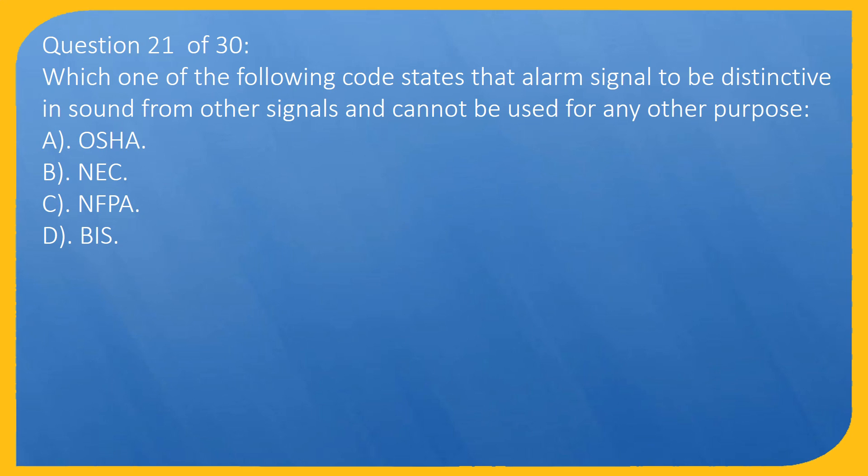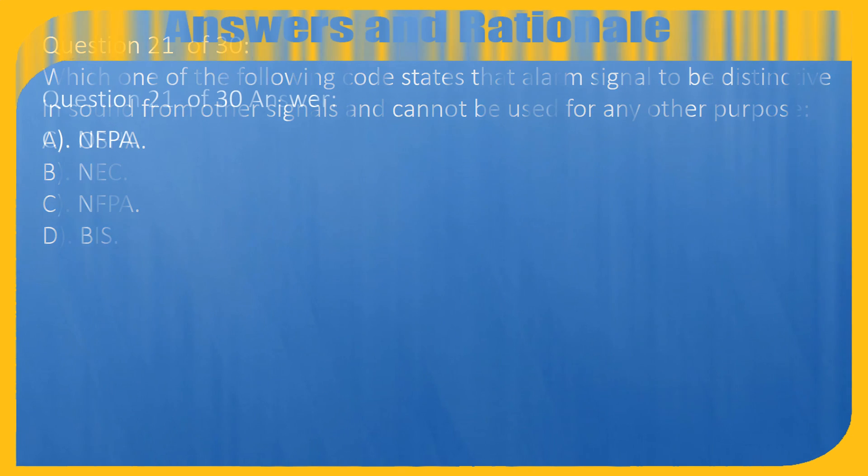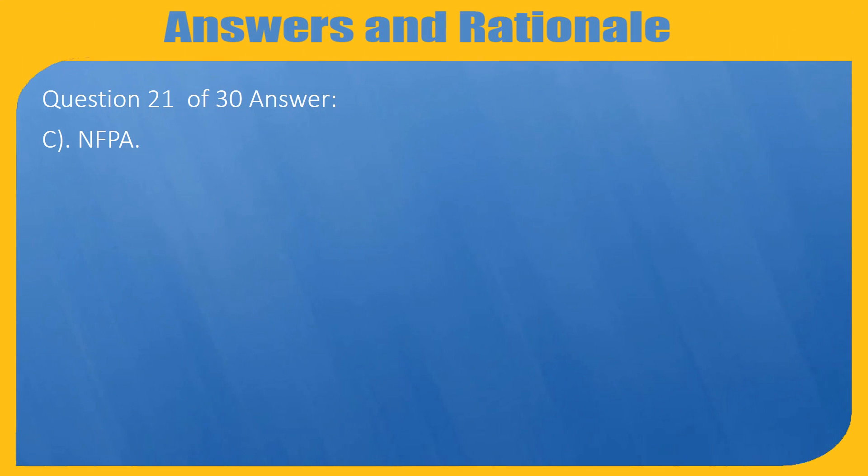Question 21 of 30: Which one of the following code states that alarm signal to be distinctive in sound from other signals and cannot be used for any other purpose? A. OSHA, B. NEC, C. NFPA, D. BIS. Answer: C. NFPA.